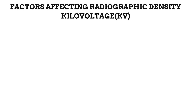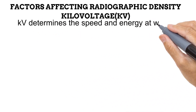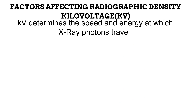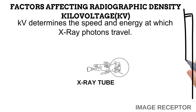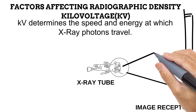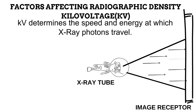The next influencing factor is kilovoltage. The KV determines the speed and energy at which X-ray photons travel. X-ray photons require energy to reach the image receptor, but photons in the beam do not all possess the same energy — some have higher energy than others. While some photons have enough energy to reach the image receptor, some die off and do not make it. By increasing the kilovoltage, energy is increased across all photons, meaning more X-ray photons make it to the image receptor, producing greater radiographic density.